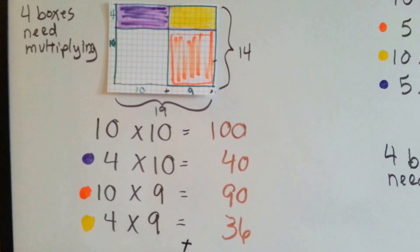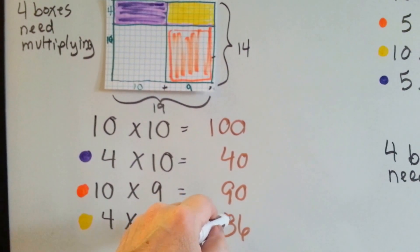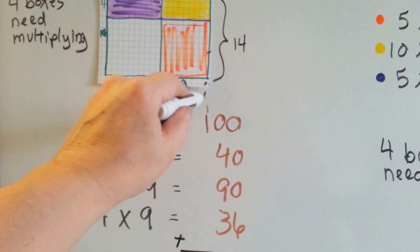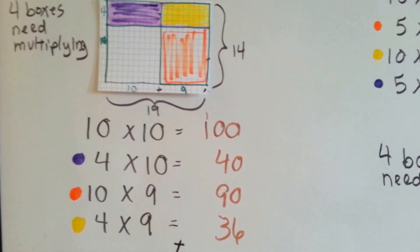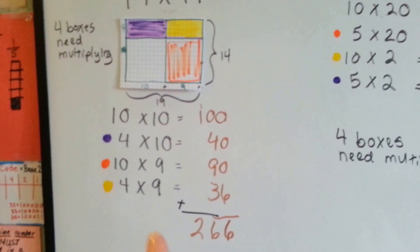Now we're going to add these all up. 0, 0, 0, and 6 is 6. 4 and 9 is 13, 14, 15, 16. Carry the 1. Put the 6 down. And 1 and 1 is 2. So, 14 times 19 is 266. Let's try this one.